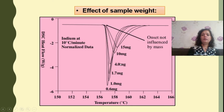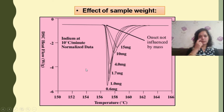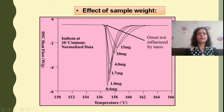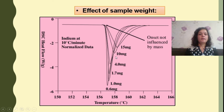Similarly, for a different type of material with varying amounts — 15 mg, 10, 4, 1.7 mg — decreasing the sample amount while keeping all other conditions the same shows that the onset of melting point does not show a particular change, but the peak area, peak point, and temperature show slight variation with respect to the sample under analysis.